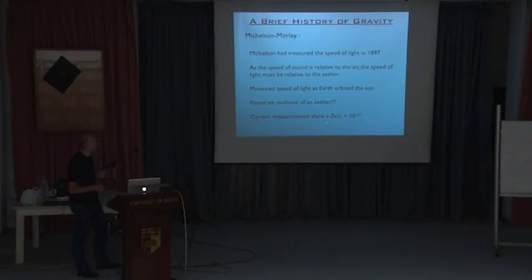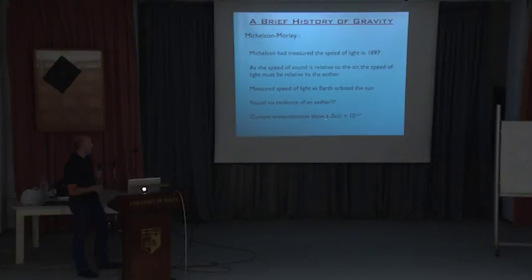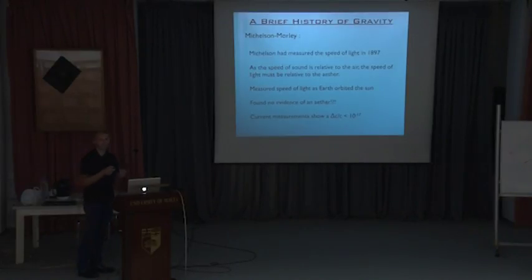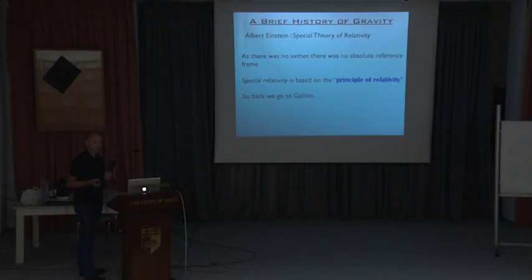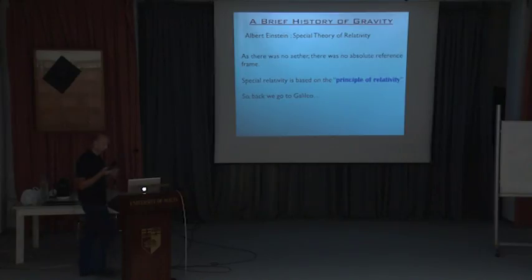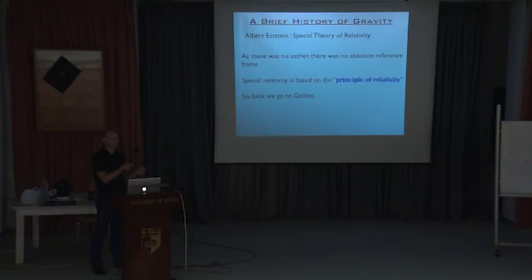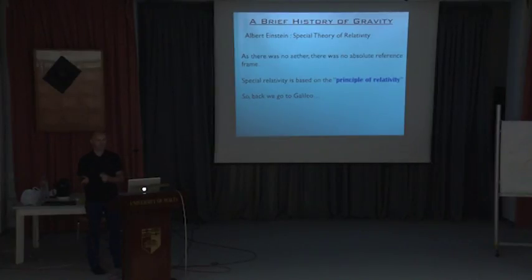Michelson and Morley found no evidence of ether. Modern experiments confirm the speed of light varies less than 1 part in 10^-17 — phenomenally accurate for something traveling at 10^8 m/s. This created a fundamental incompatibility: Newton's laws of motion and Maxwell's equations of electromagnetism couldn't be reconciled. Newton's laws worked perfectly for rolling objects and forces; Maxwell's equations worked for light and electromagnetic phenomena — but putting them together gave nonsensical answers.